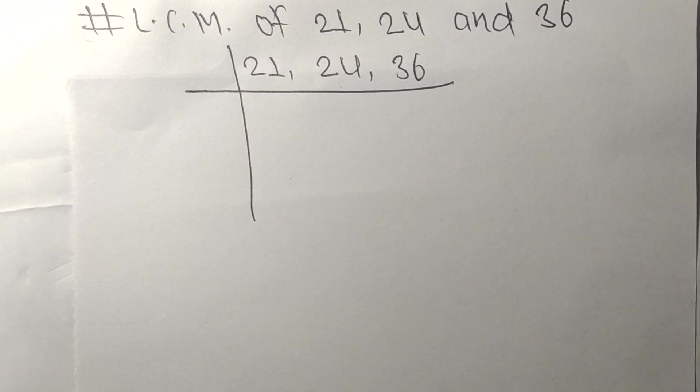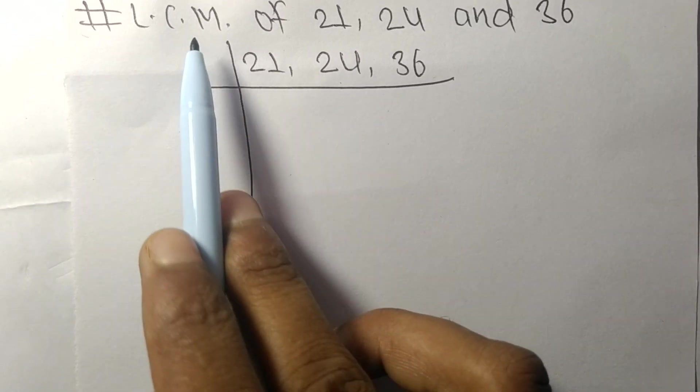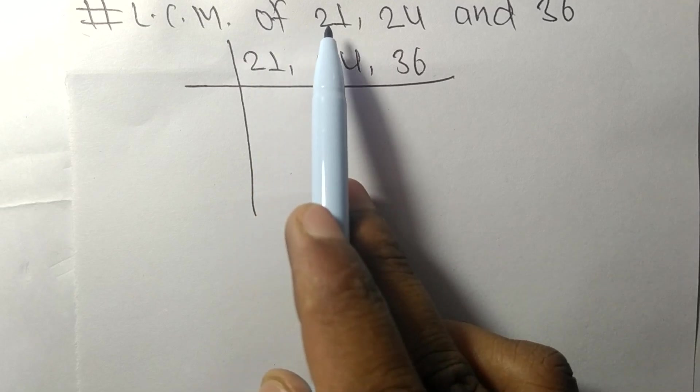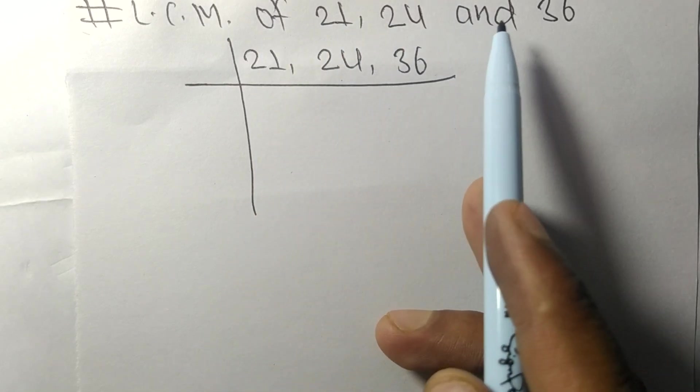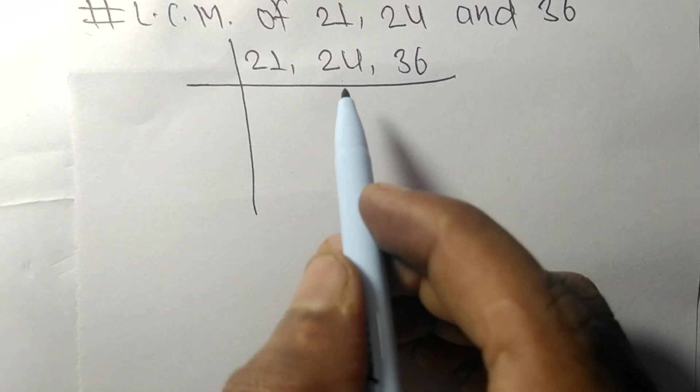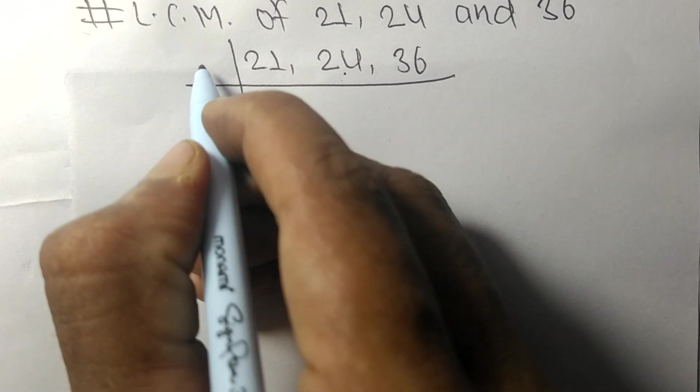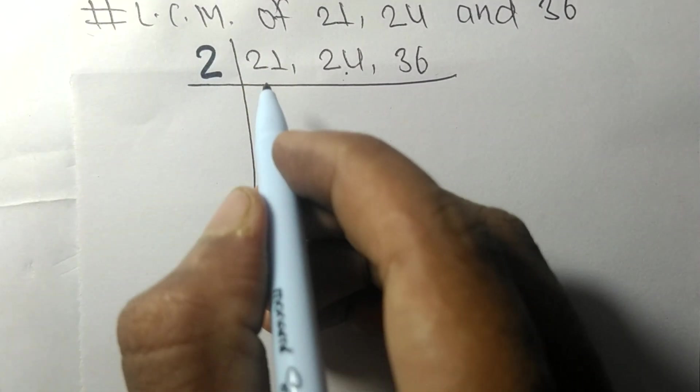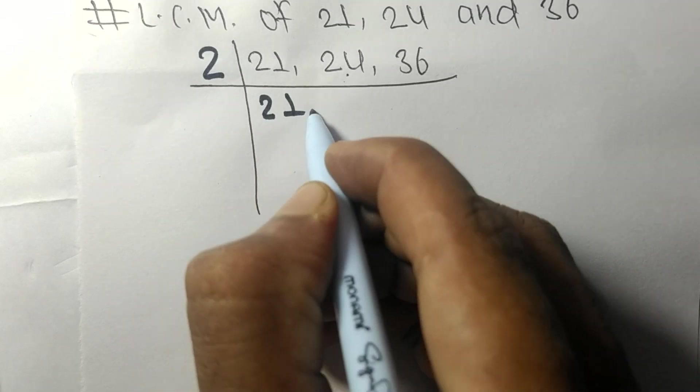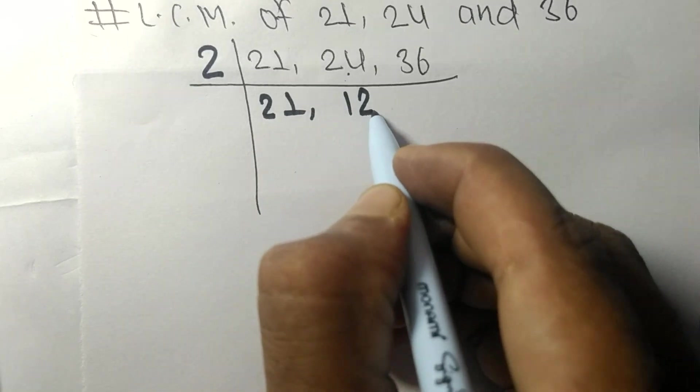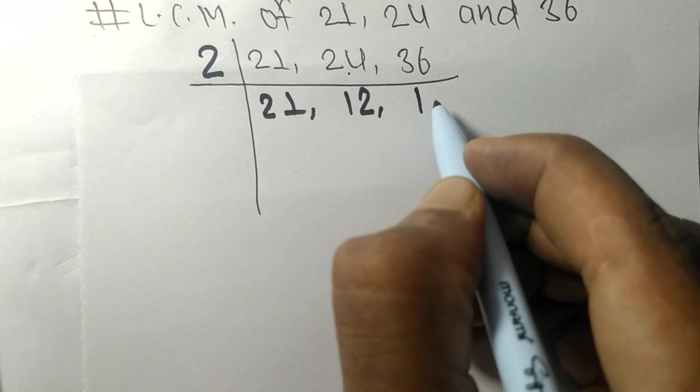So today in this video we shall learn to find the LCM of 21, 24, and 36. 24 and 36 are divisible by 2, 21 is not divisible so it is the same. 2 times 12 equals 24, 2 times 18 equals 36.